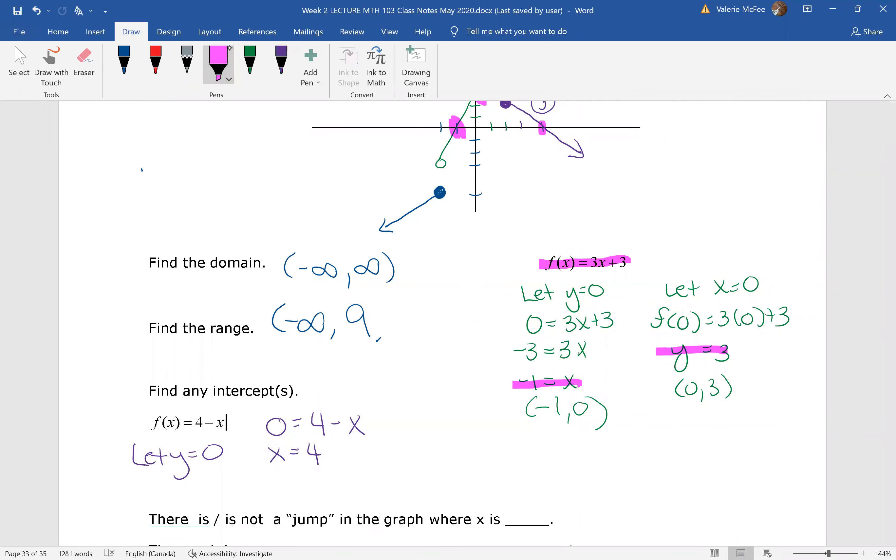I knew that my third intercept was an x-intercept, so we needed to let y equals zero, and we found that x was equal to four. So use the graph, figure out which equations you need to find your intercepts.